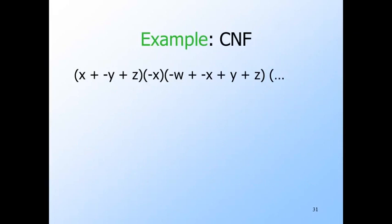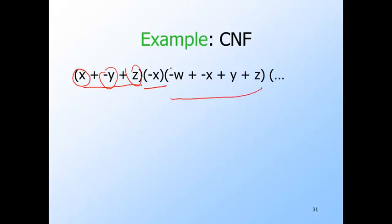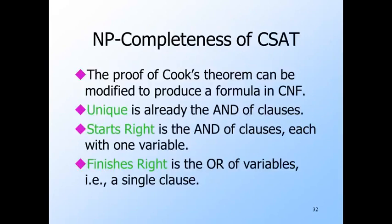Here's an example of a CNF expression. The first clause is X OR NOT Y OR Z — that is, X, NOT Y, and Z are each literals. The second clause is just NOT X — a clause can be the OR of only one literal. The third is the OR of four literals, which are NOT W, NOT X, Y, and Z.